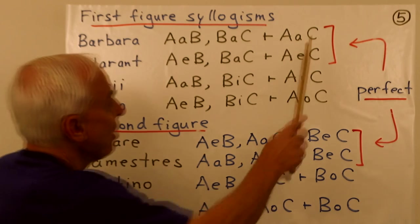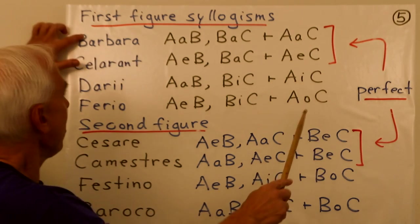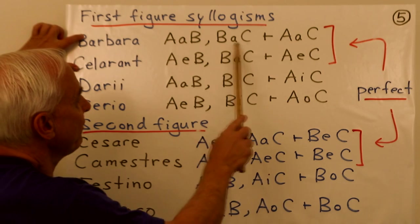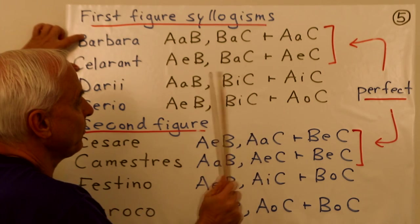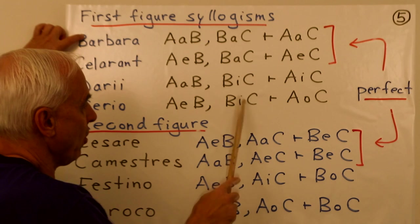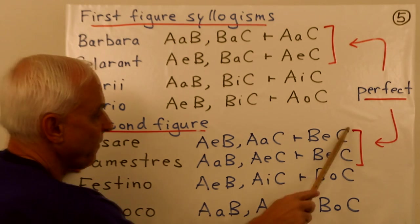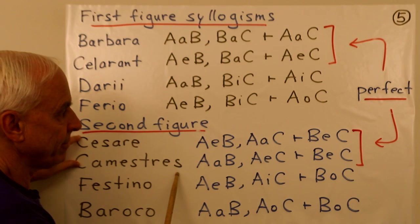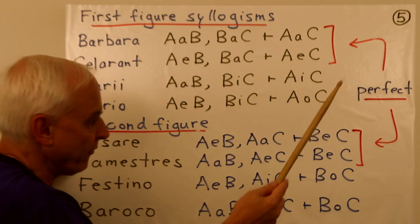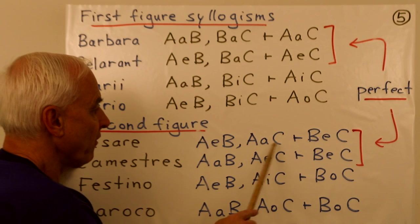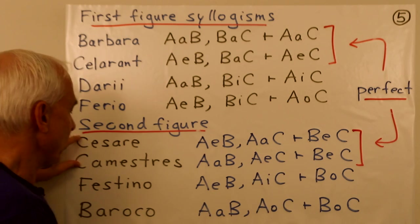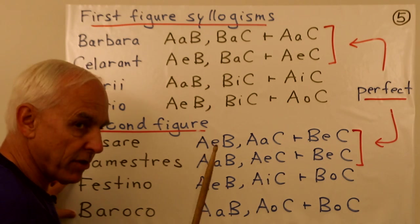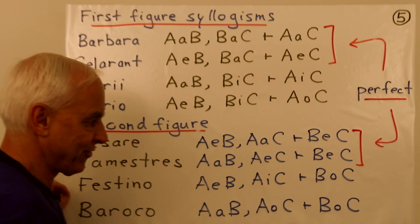Which are those? They are these two right here, Barbara and Celerant, only involving A's and E's. These two involve I's and O's. Similarly down here in the second figure, the first two, Cesare and Camestres, are perfect. We'll call them perfect. They only involve these A's and E's, but not the slightly more complicated I's and O's.